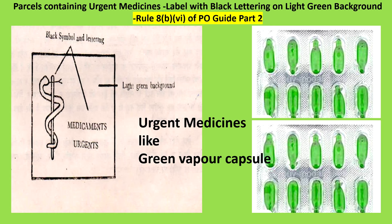We will see what are the possible image questions in this video in PO Guide Part 2 so that you don't have any doubt at the end. I will also tell you small tricks on how to remember these image questions easily at the end. Stay tuned so you will never miss the important information. This is the image question that was given in the 2020 PA examination: parcels containing urgent medicines are labeled with black lettering on a light green background, as per Rule 8B6 of PO Guide Part 2.